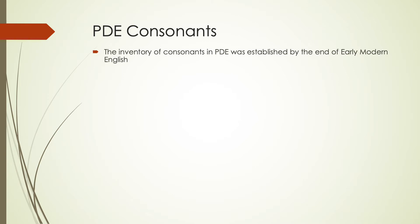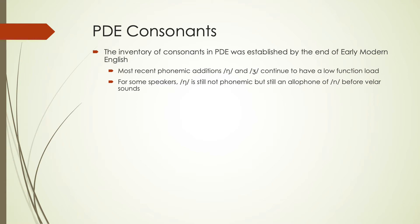Our consonants in present-day English were already established by the end of early modern English. There are no new phonemes in modern English from early modern, but the glottal stop has been introduced as our newest sound, only found in allophonic environments. The most recent phonemic additions continue to have a pretty low function load — we don't use them in as many places as most other sounds. The J especially is only typically found in French borrowed words. And for some speakers, the velar nasal is still not phonemic and is mostly just an allophone of N before velar sounds.